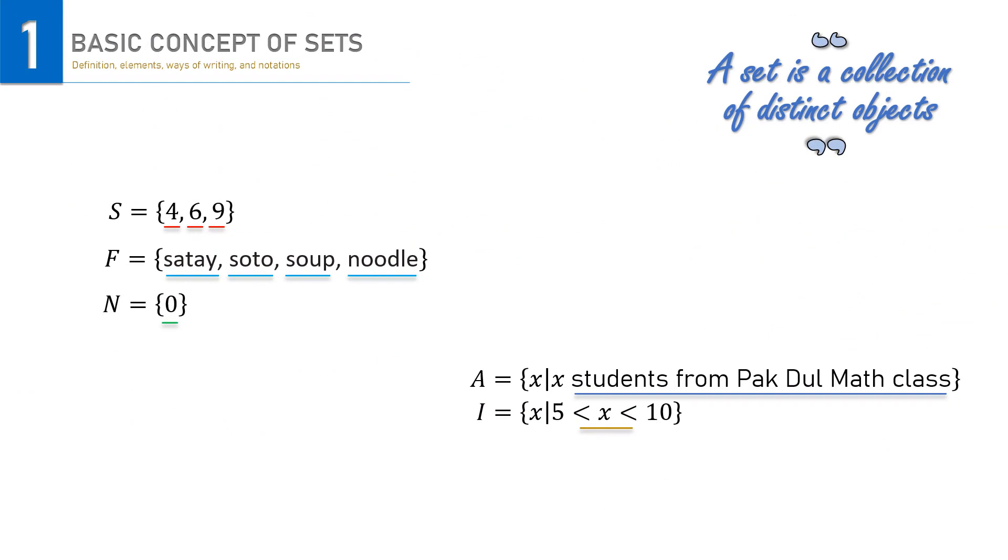4, 6, and 9 as we already know before are all the members or elements of set S. It can be written like this. We use Greek letter epsilon to indicate that the numbers belong to set S. Likewise, we can express satay epsilon F, meaning that satay is element of set F, or 0 epsilon N, as 0 is the element of the set N.